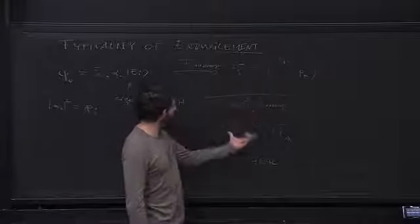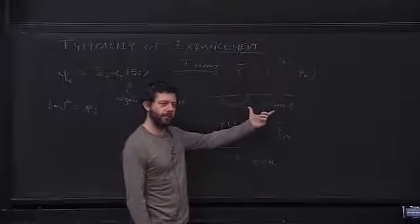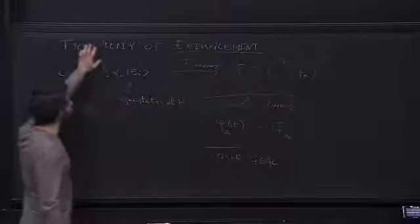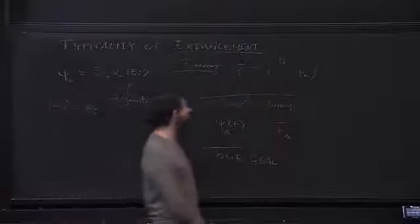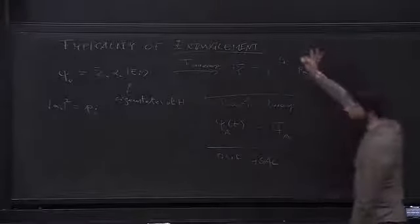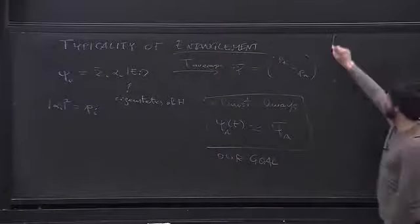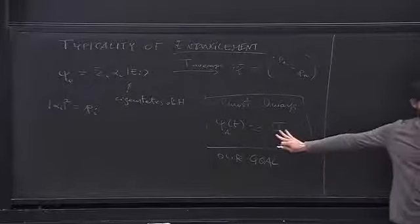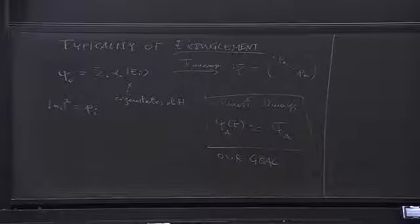Since this happens almost always, this is what we mean by 'typical.' Our strategy is to show typicality of entanglement. The final goal is non-trivial and requires several steps. Today we'll do all of them.